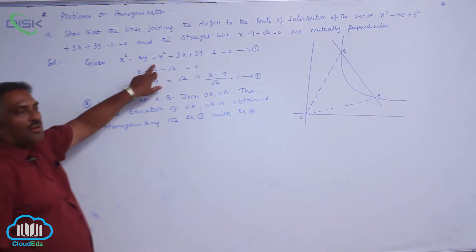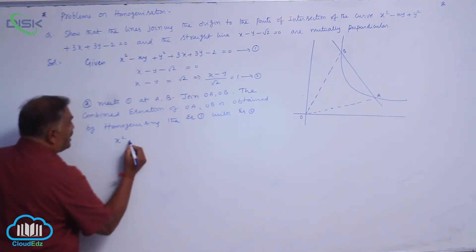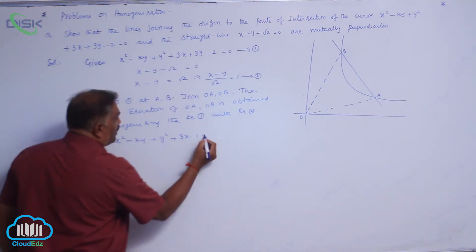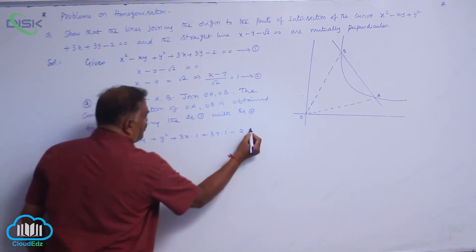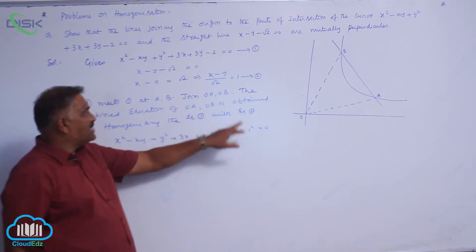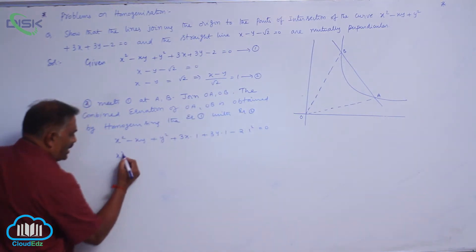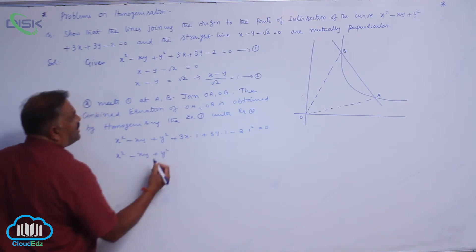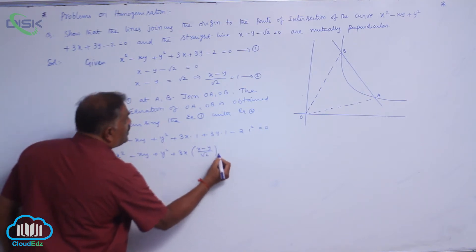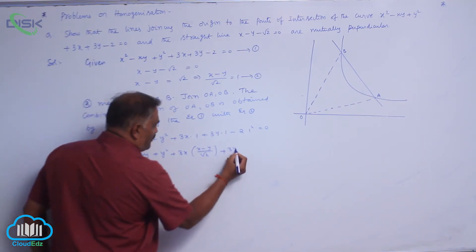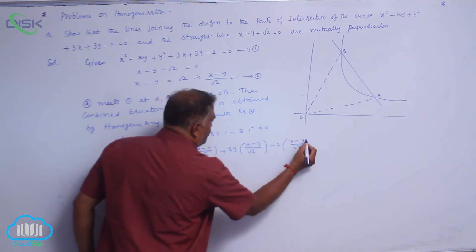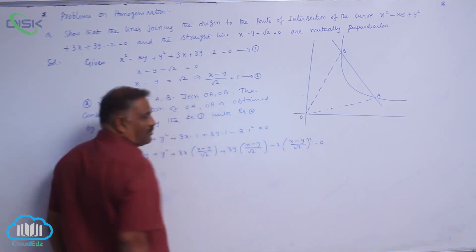Write take the first equation x² - xy + y² + 3x·1 + 3y·1 - 2·1² = 0. Let us substitute in place of 1 this value: x² - xy + y² + 3x(x - y)/√2 + 3y(x - y)/√2 - 2((x - y)/√2)² = 0.